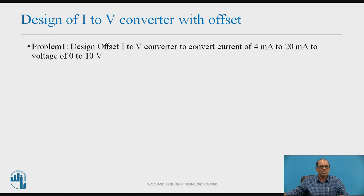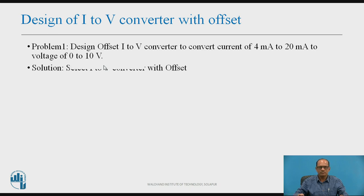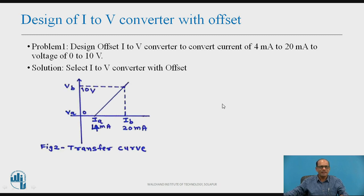Now let us proceed further for the design of I-to-V converter with offset problems. Problem 1: design an offset I-to-V converter to convert a current of 4 mA to 20 mA into a voltage of 0 to 10 V. Solution: select I-to-V converter with offset as the basic circuit. From the given data, the transfer curve can be plotted as shown in figure — input is 4 mA to 20 mA and the output is 0 to 10 V.